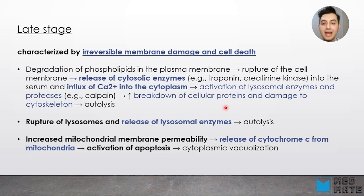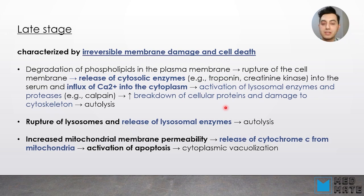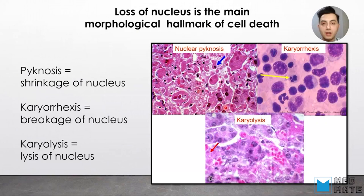The next stage of hypoxia is the late stage, and this stage is irreversible. It happens when there is damage to the membrane of our cell, leading to cell death. Degradation of phospholipids in the plasma membrane causes rupture of the cell membrane and release of cytosolic enzymes — for example, troponin or creatine kinase — into the serum. This leads to influx of calcium into the cytoplasm, which causes activation of lysosomal enzymes and proteases, breaking down cellular proteins and damaging the cytoskeleton — a process called autolysis. Also in the late stage, increased mitochondrial membrane permeability causes release of cytochrome C, which activates apoptosis.